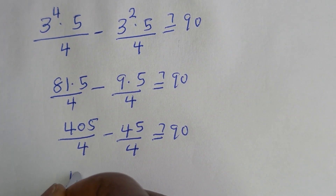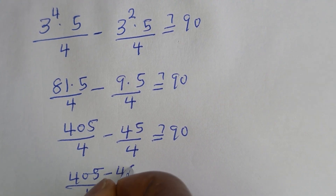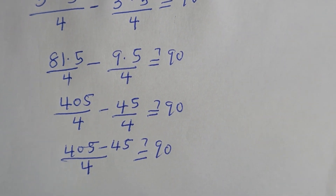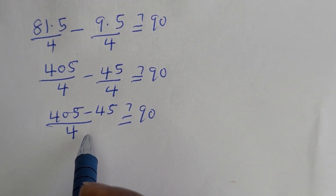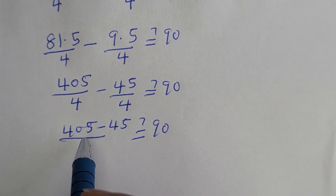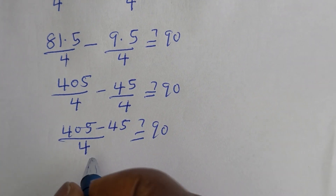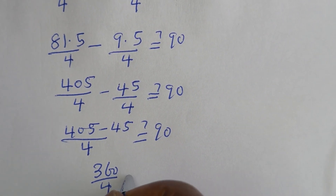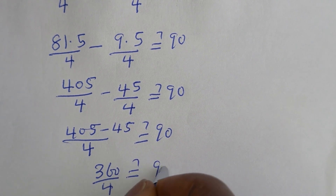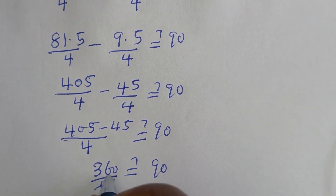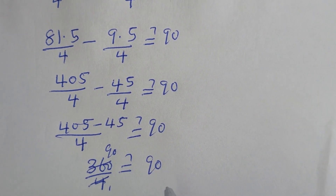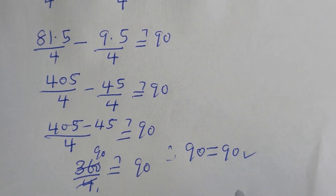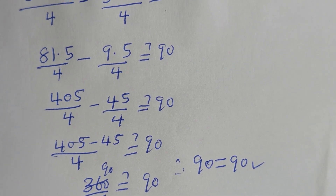We have 405 minus 45, which is 360, over 4, must equal 90. And 360 divided by 4 is 90. Therefore we have 90 is equal to 90, which is true. I hope you enjoyed the video. Thank you for watching.